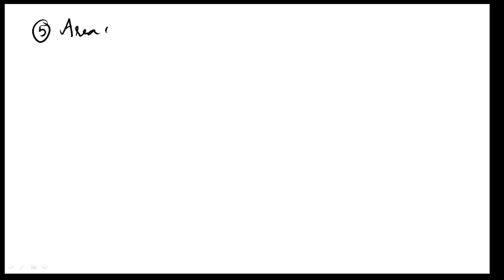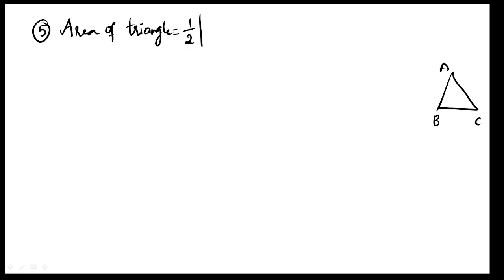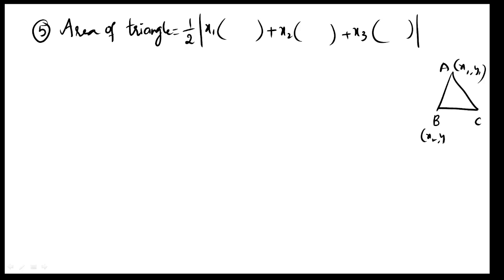Area of triangle formula: three vertices A, B, C with points x1, y1; x2, y2; x3, y3. The area formula uses these three coordinate points. You can label them 1, 2, 3 in order.